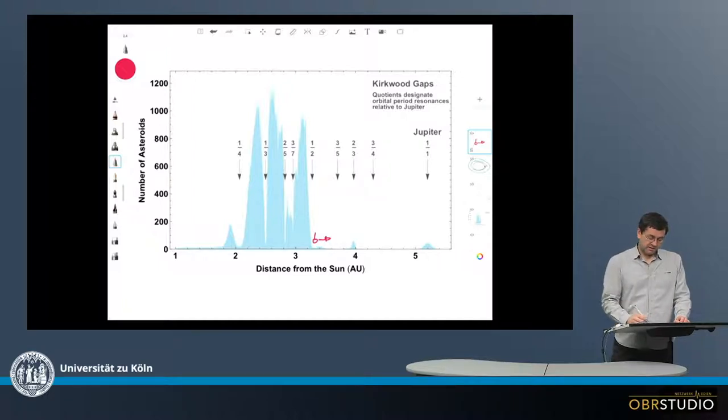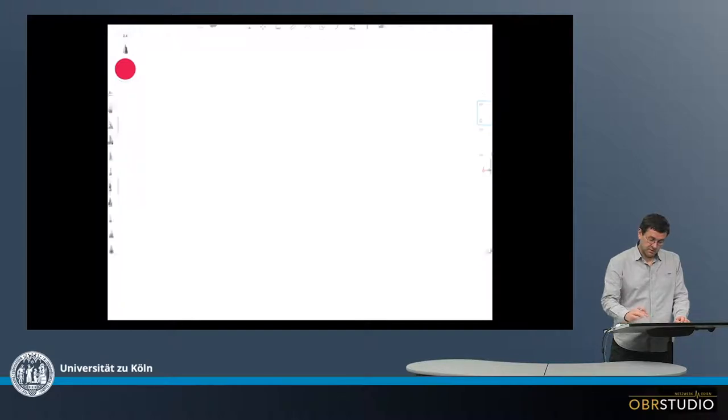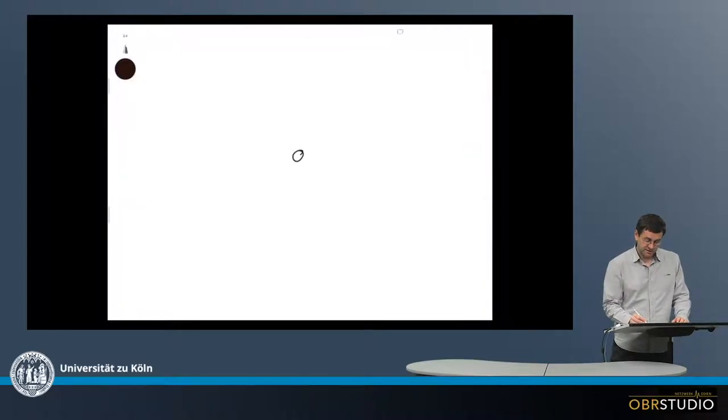One might expect that there's a large peak here or something like this. But what can also happen is that if we have, for example, the Sun again in the center and here's Earth now, and then there's Jupiter here and here are the asteroids,